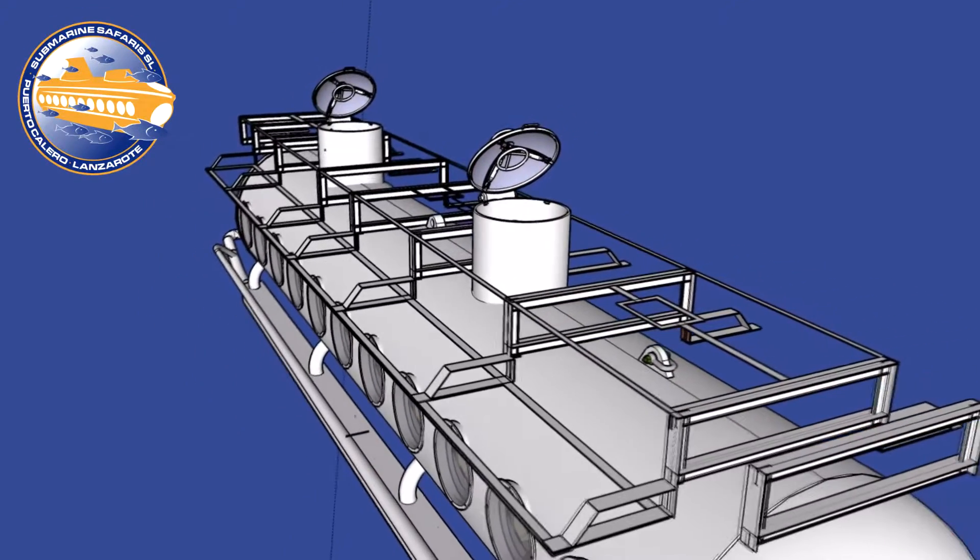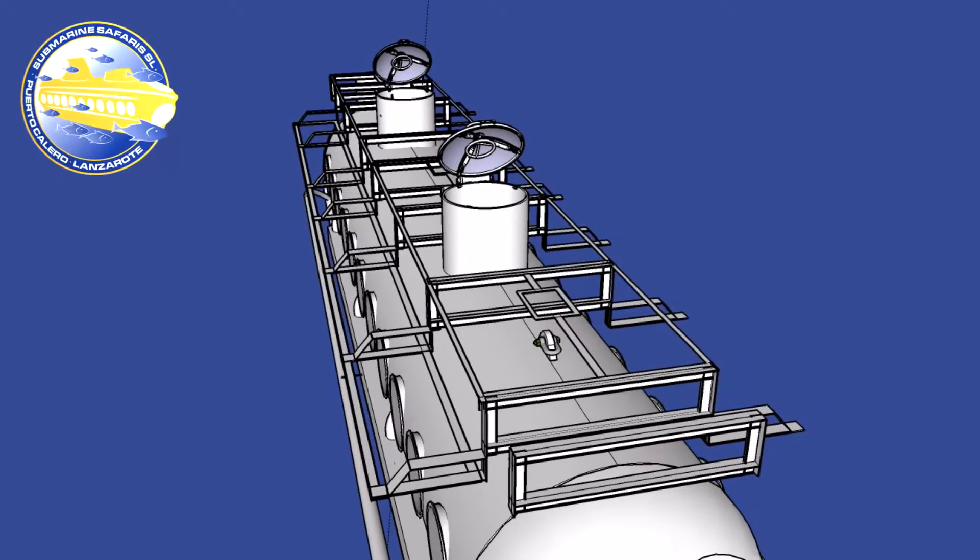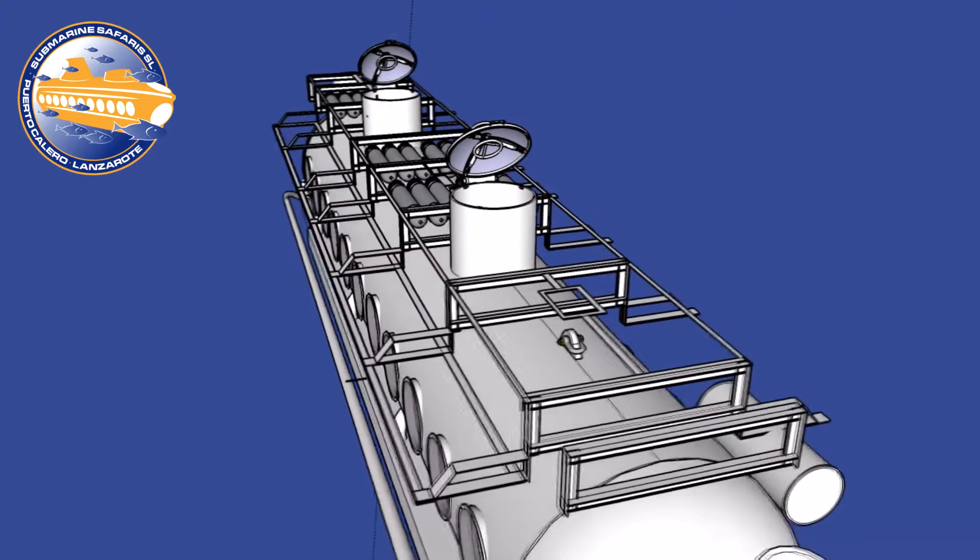An exo-structure supports all the external equipment and storage for 12 oxygen bottles. They supply the air we breathe on board the submarine.